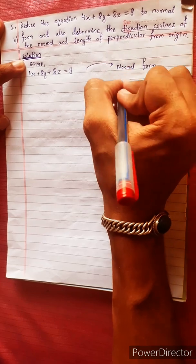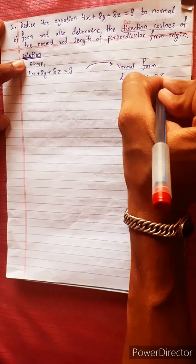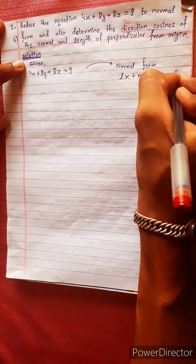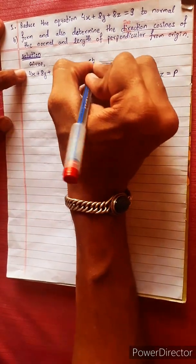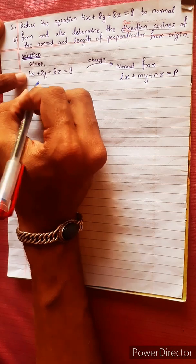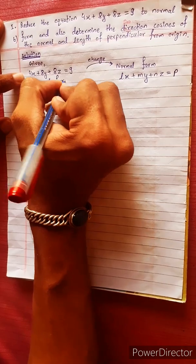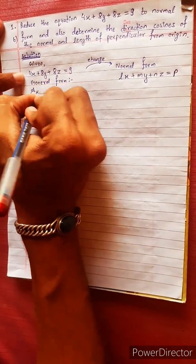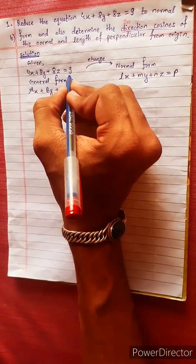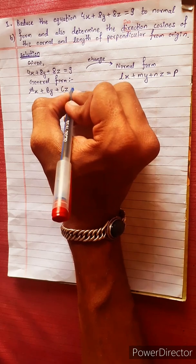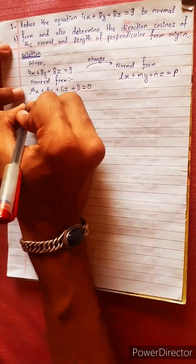The normal form is lx + my + nz = p, where p is the perpendicular distance. The general form (standard equation) is ax + by + cz + d = 0.